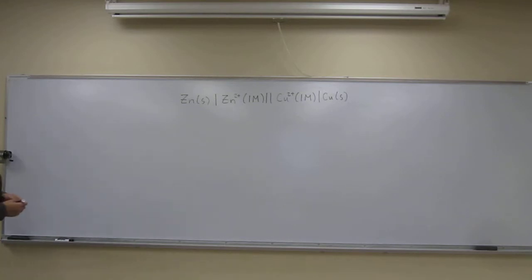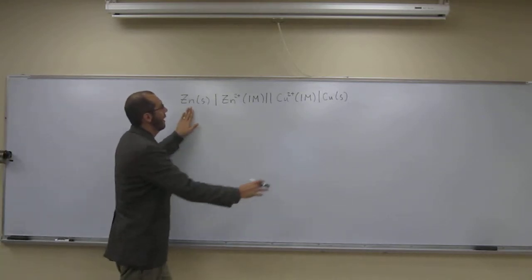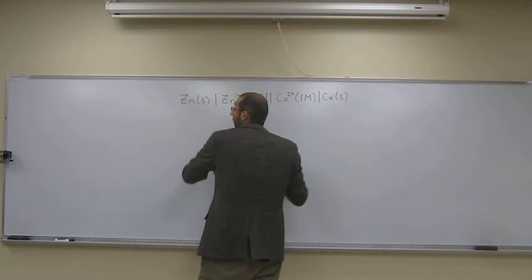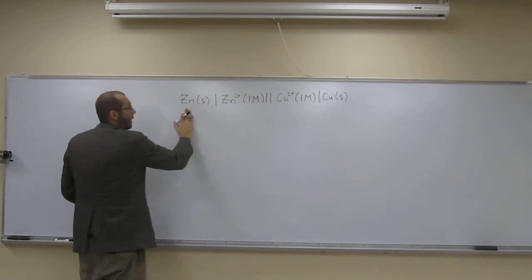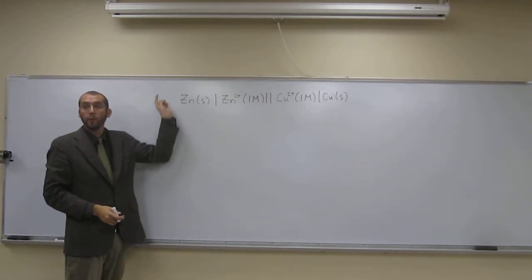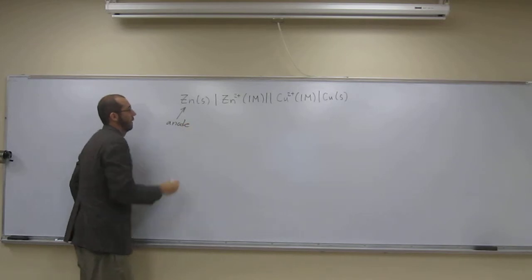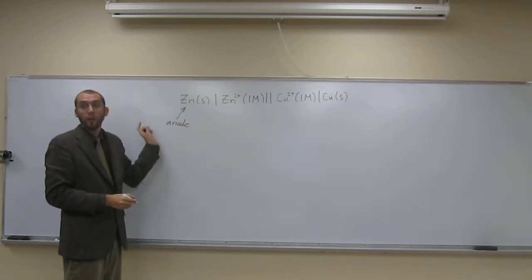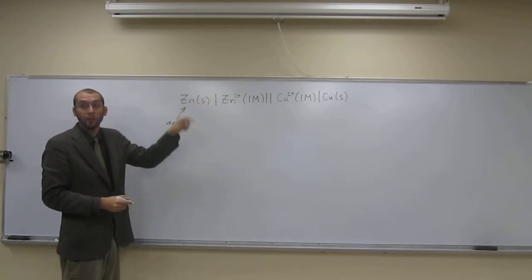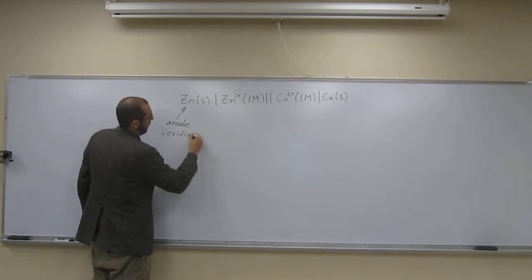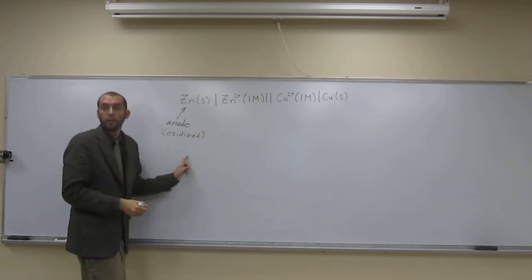The things at the ends - this is zinc solid, this is copper solid - those are the two electrodes. The one on the left side, that's where the electrons are flowing from, so that's going to be the anode. Electrons are going away, it's losing electrons, so it's oxidized.